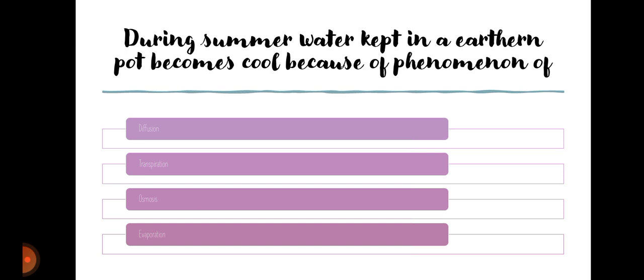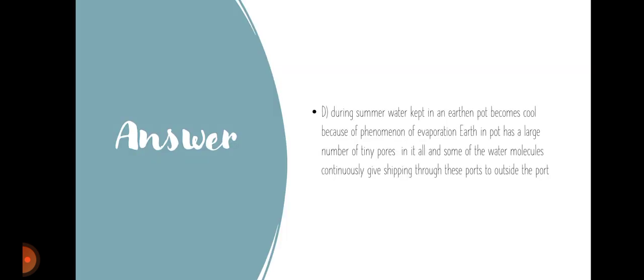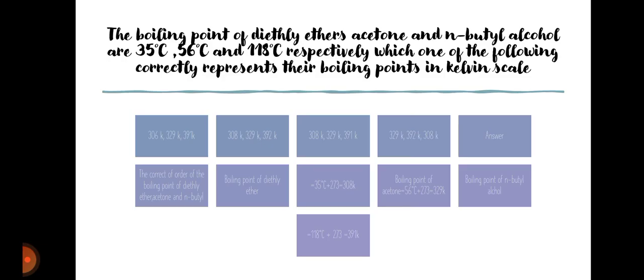During summer, water kept in an earthen pot becomes cool because of the phenomenon of: (A) diffusion, (B) transpiration, (C) osmosis, or (D) evaporation. The answer is D. Water kept in an earthen pot becomes cool due to evaporation. The earthen pot has a large number of tiny pores, and some of the water molecules continuously seep through these pores to the outside of the pot.